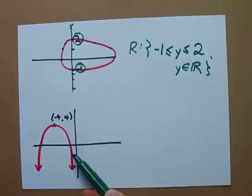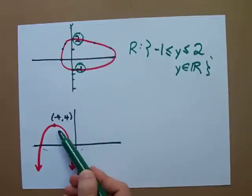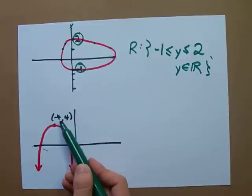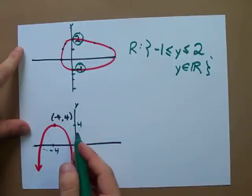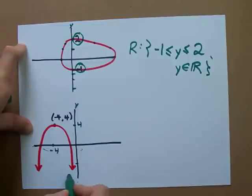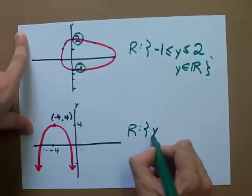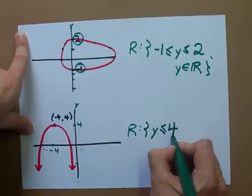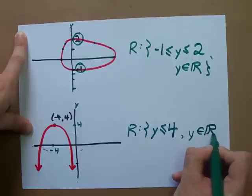The most common type of question you'll be asked is the range for a parabola, because a parabola always has a maximum or, if it opens up, a minimum. This parabola goes as high as 4 — the vertex coordinates are negative 4 and positive 4 on the y-axis — and it opens down. So y can be anything that's 4 or less, even going down to negative 100 or negative 1,000. That arrow means we go down infinitely. The range is y ≤ 4, and y must be a real number.